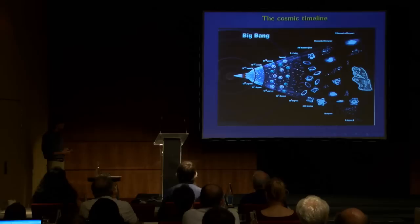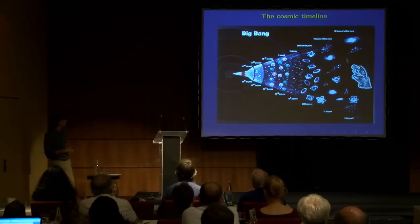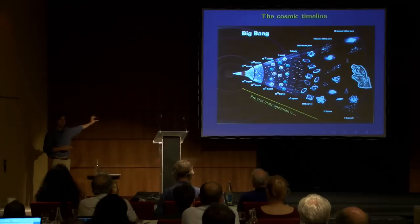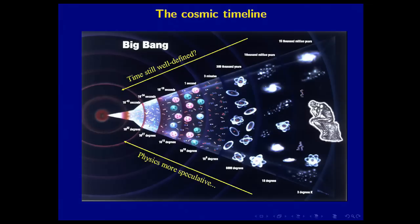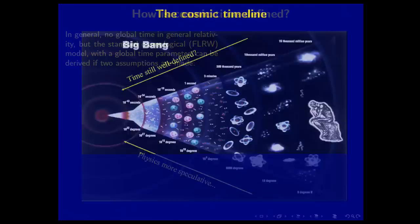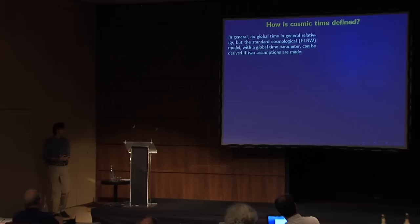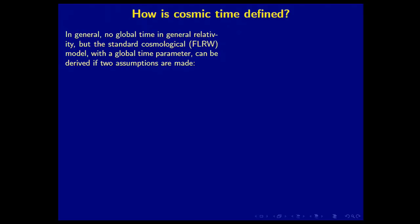So, now let's look at modern cosmology. Actually, this is a bit of an old picture, but I like it. So we are sitting there, 14 billion years after, and looking back. And we ask, what we know, that physics become more and more speculative the further we go back in time. But the question I want to ask here, with Plato in mind, is whether the time concept we used to go backwards with is still well defined in our backwards extrapolation. Now, in order to answer that, or to look at that, we will have to see on how cosmic time is defined. And as you well know, in general, there is no global time in general relativity. But in the standard cosmological model, the Friedman-Lemaître-Robertson-Walker model, with a global time parameter, that model can be derived if we make two assumptions. And I want to spell them out here, because they're not always spelled out, both of them.